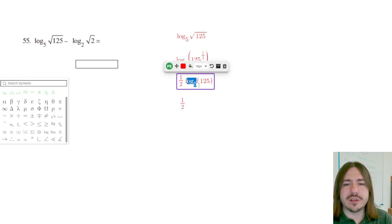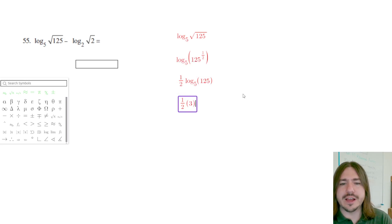So when you're evaluating logarithms, you want to be thinking about the fact that a logarithm is an exponent. And so the question really here is 5 to what power is 125? And 5 to the third power is 125. So log base 5 of 125 is 3.